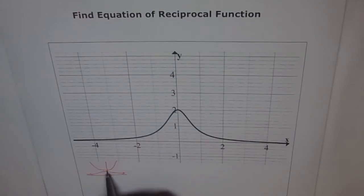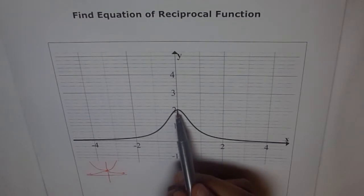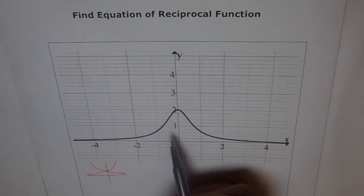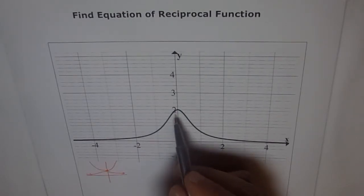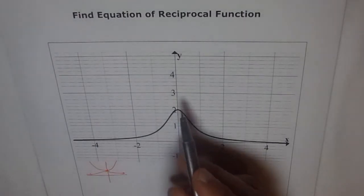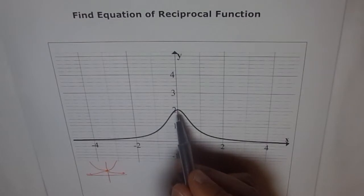Let's try to find the vertex point. From the symmetry, it seems the vertex is at x equals 0. Now, the maximum here is 2. So in the reciprocal, it would be 1 over 2. So the original function from where we have drawn this should have 1/2.